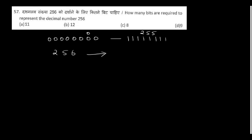How many bits are required to represent decimal number 256? Be careful — with 8 bits we can represent from 0 to 255, so we cannot represent 256. To represent 256 we need one more bit, so 9 bits are required.